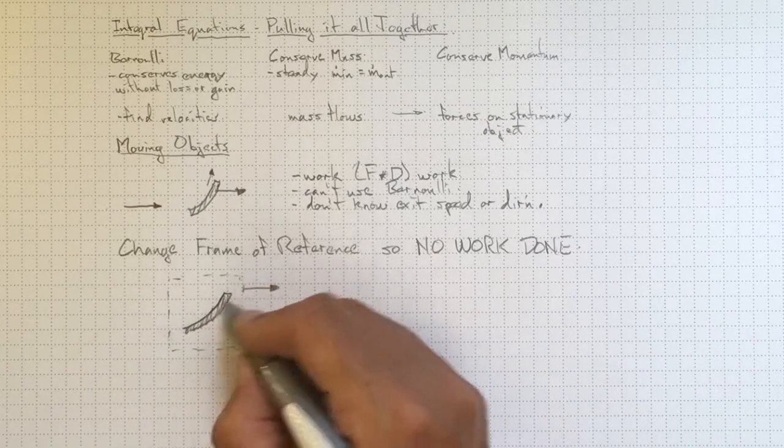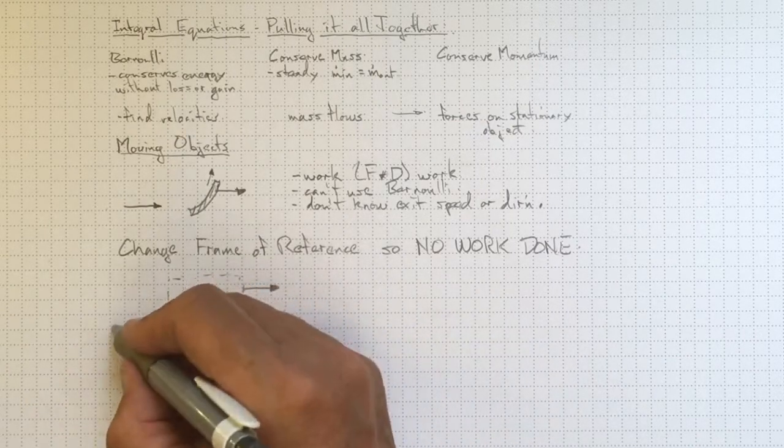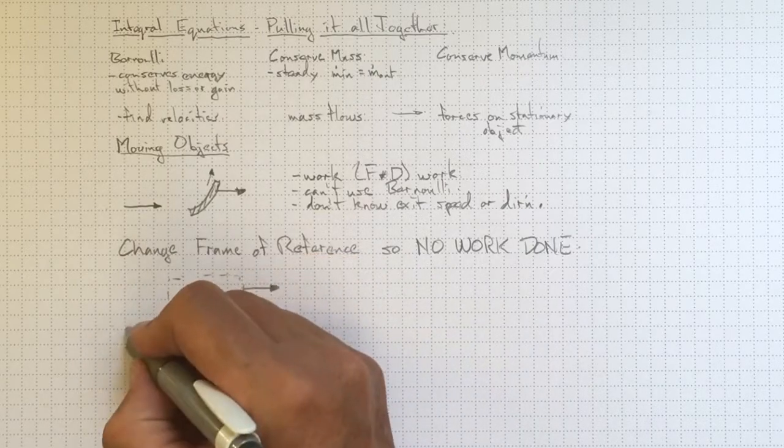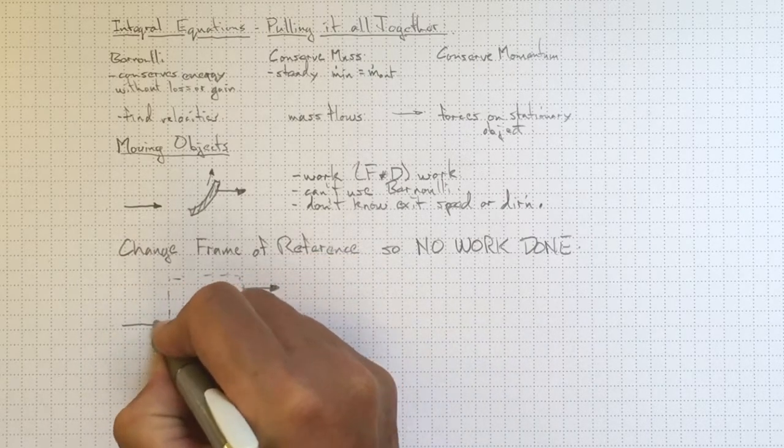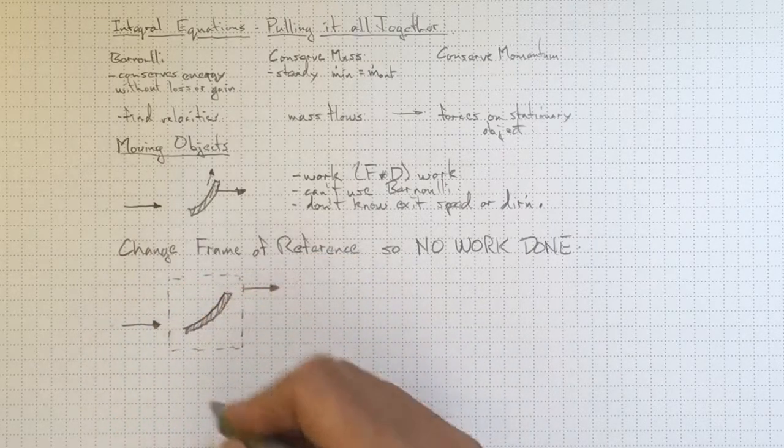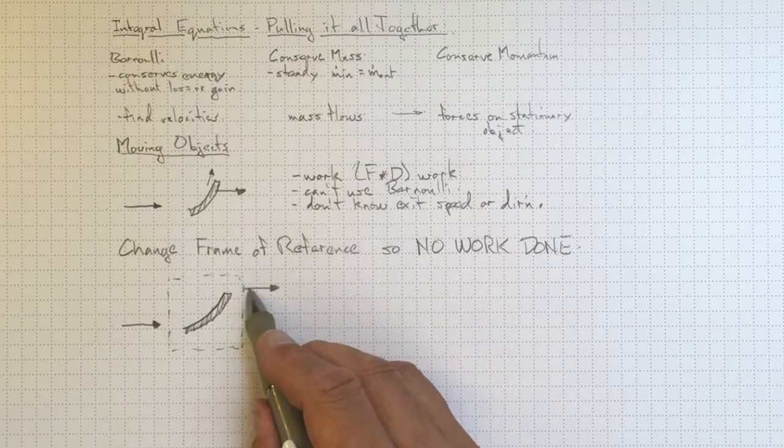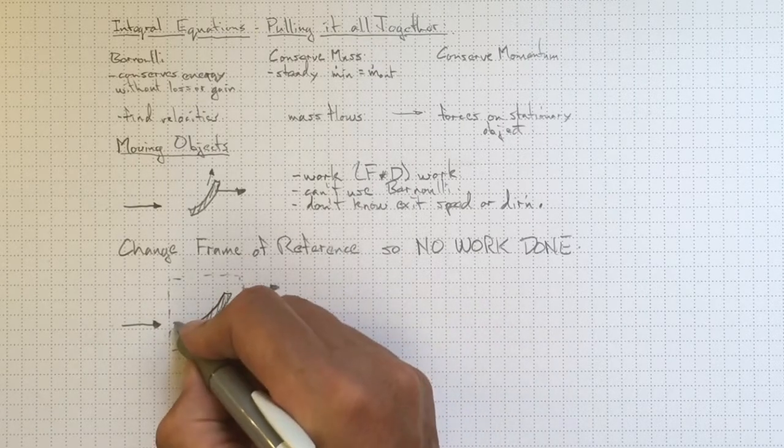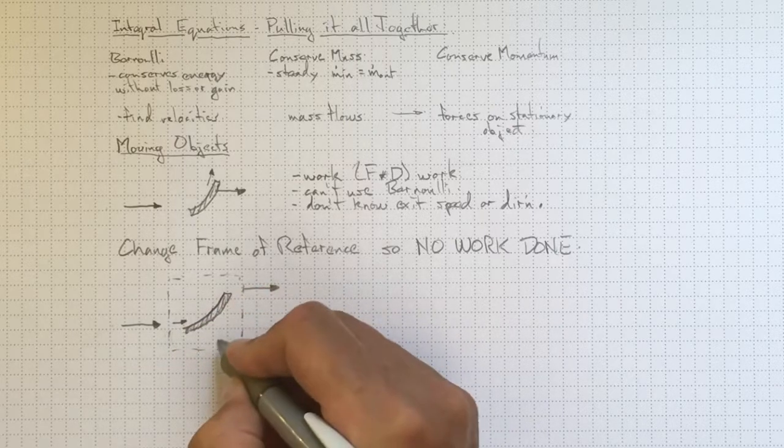Now, inside this control volume, the blade is stationary. Outside this control volume on our fixed to the page reference, we've still got fluid coming in this way fairly quickly. But because this frame of reference is moving that way, the relative velocity is quite a bit smaller.